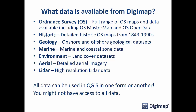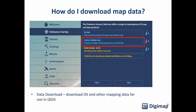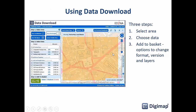All these datasets from Digimap can be used in QGIS in one form or another, but remember you might not have access to all collections. To obtain data, every collection has its own data download interface — it's a three-step process. First, go into data download and drag a box or use coordinates to select your area of interest. Next, choose the data from the panel on the left, which expands to show many datasets. Once you've ticked those boxes, add the data to your basket where you can change options such as format, version, and layers.